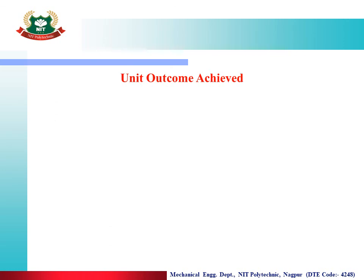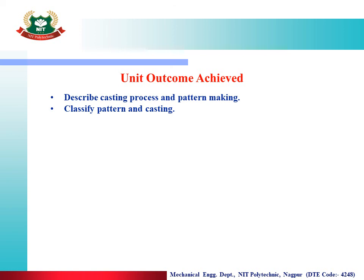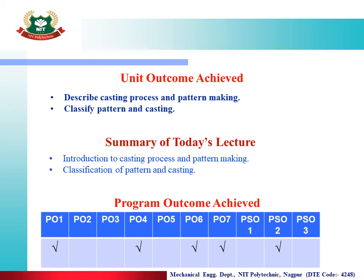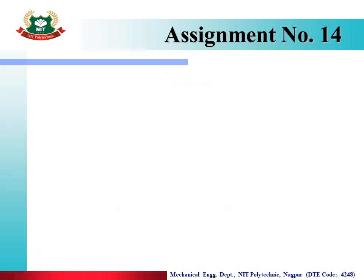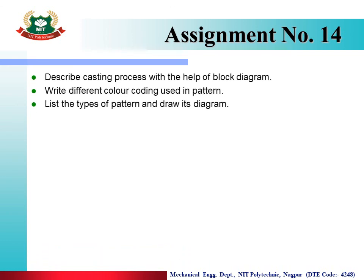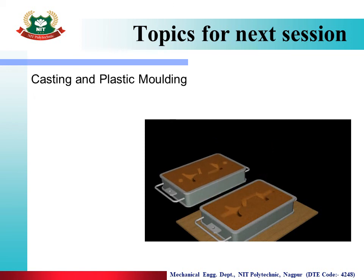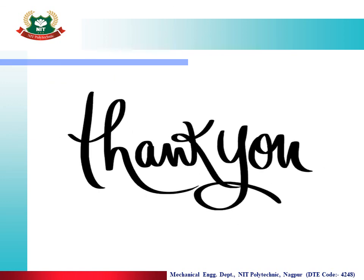The unit outcomes achieved by this lecture are: describing casting process and pattern making, and classifying patterns and castings. Summary of today's lecture: introduction to casting process, pattern making, and classification of pattern and casting. Program outcomes achieved: PO1, PO4, PO6, PO7, and PSO2. Assignment No. 14 questions: describe casting process with a block diagram; write different color codings used in patterns; list types of patterns and draw diagrams. Watch this video again for solutions. The next session will cover pattern materials and their properties in casting and plastic moulding. Thank you, happy learning, stay online.